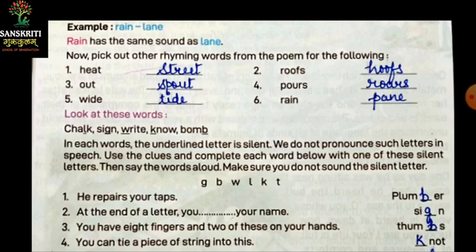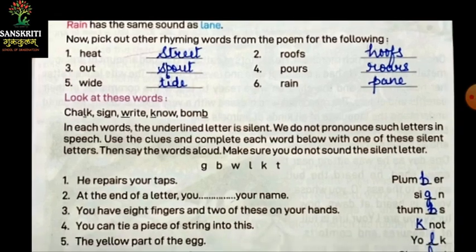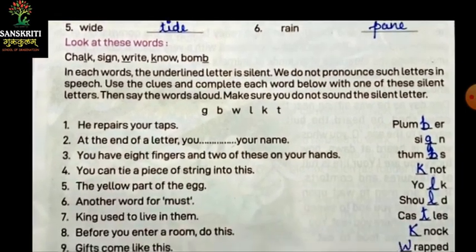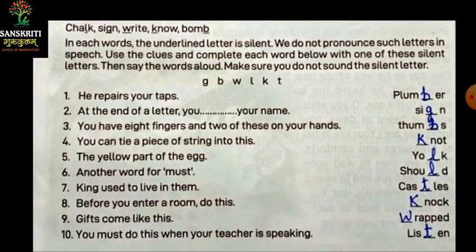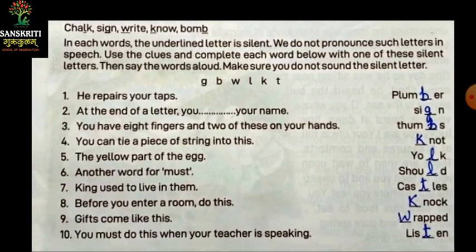Use the clues and complete each word below with one of these silent letters. Then say the words aloud — make sure you do not sound the silent letter. Ab dekhte hai humaare paas neeche bhi aise hi kuch diye huye hai. Usmein bhi humko silent letters use karne hai. Dekhi kya kya diye huye hai: G, B, W, L, K, and T.